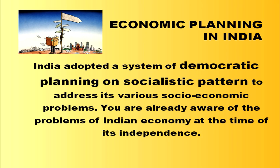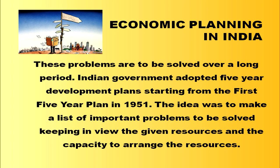India adopted a system of democratic planning on a socialistic pattern to address its various socio-economic problems. These problems needed to be solved over a long period, so the Indian government adopted five-year development plans starting from the first five-year plan in 1951. The idea was to make a list of important problems to be solved keeping in view the given resources and the capacity to arrange them.